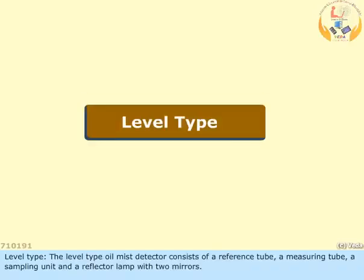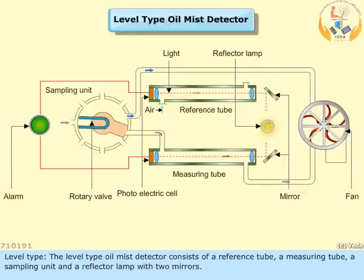Level type. The level type oil mist detector consists of a reference tube, a measuring tube, a sampling unit, and a reflector lamp with two mirrors.